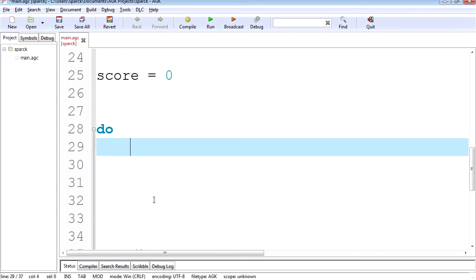It's going to be score equals zero and that's a variable already. Yeah, you can increase that variable whatever way you want. For example, you can go score equals score plus one. This will increase the variable by one.